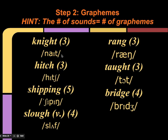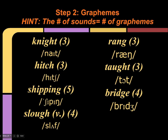When we count the IPA symbols, we have to remember how the characters work together. Let's look at how many sounds are in each word based on the number of IPA symbols. We've discussed 'night' already; let's discuss 'hitch,' 'shipping,' 'slough,' 'wrang,' 'taught,' and 'bridge.' The idea is to go through and count the number of IPA symbols, and you will have the number of sounds that exist in each word.